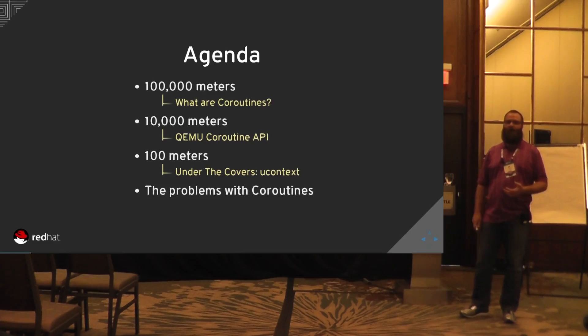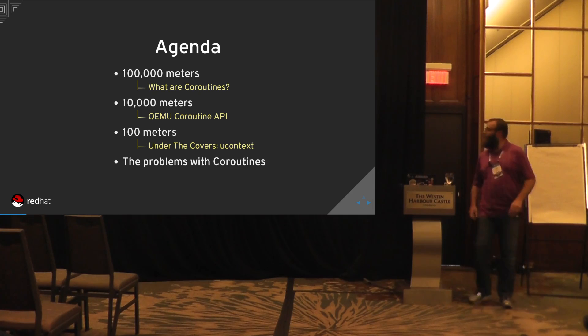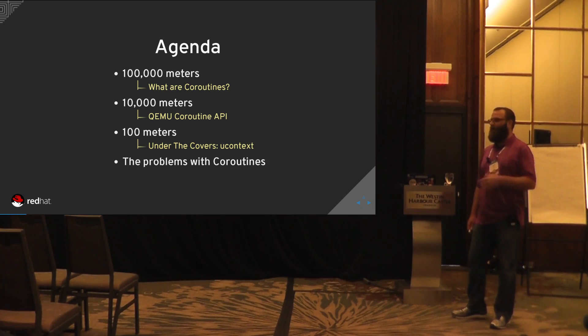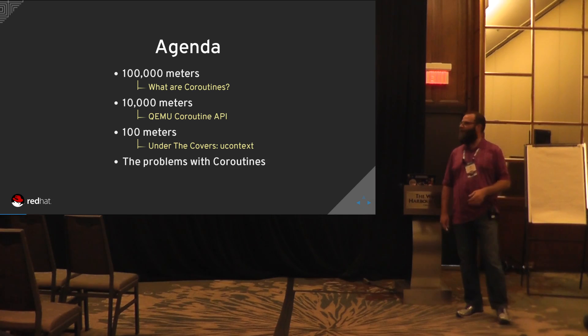We'll go over the general concept of coroutines and how they differ from something like threads, and then we'll talk about how QEMU implements coroutines and how QEMU does all the context switching. We'll cover one of the ways in which QEMU does it. There are multiple implementations, but we'll focus on one for this talk. The others are conceptually very similar.